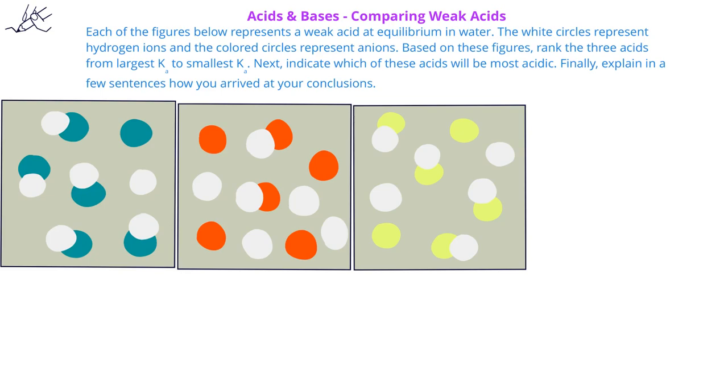In this problem, we're given three figures, and each one represents a different weak acid. The white circles in each figure represent hydrogen ions, and the colored circles represent anions for each of the weak acids.